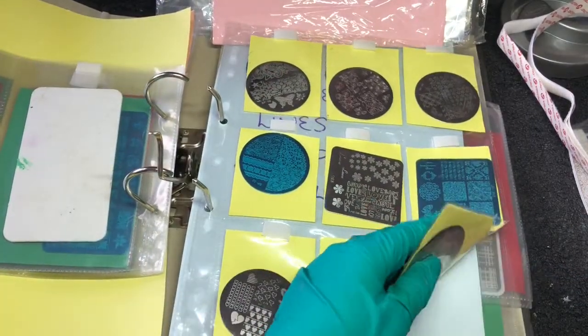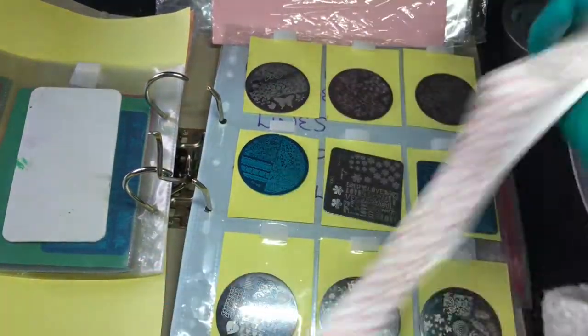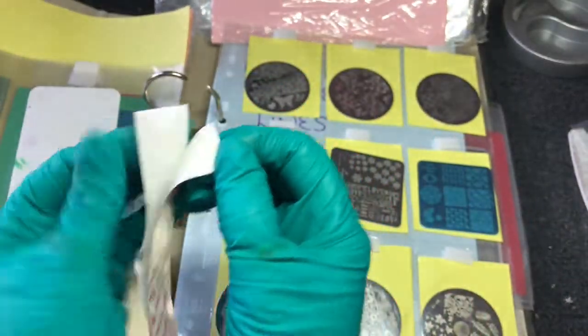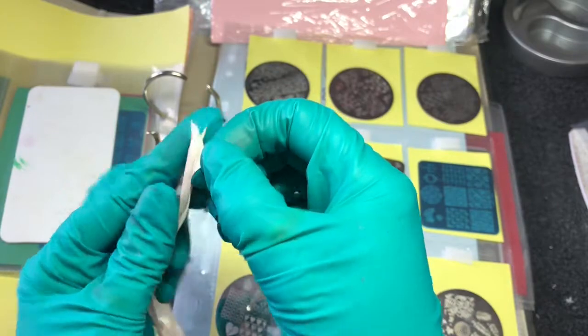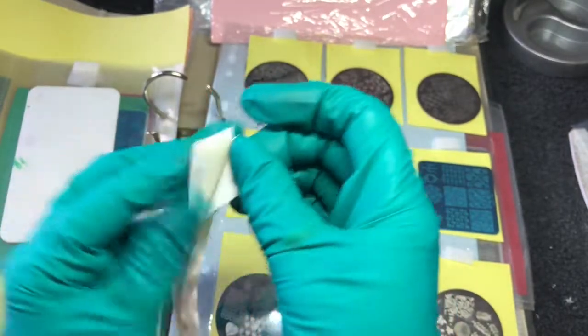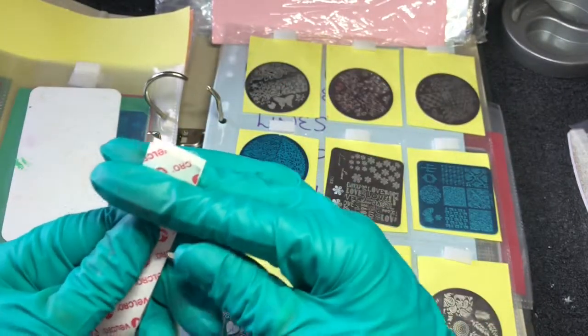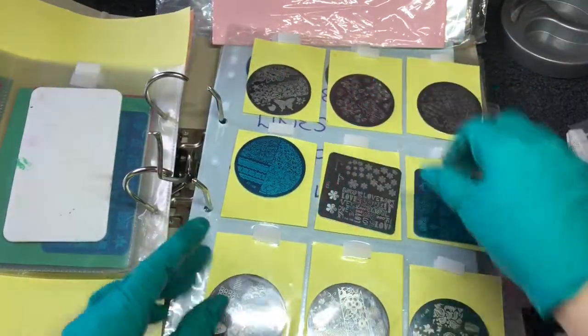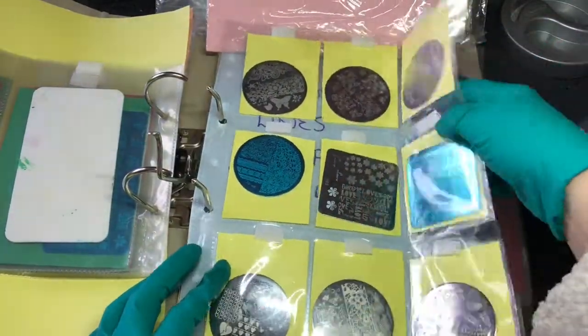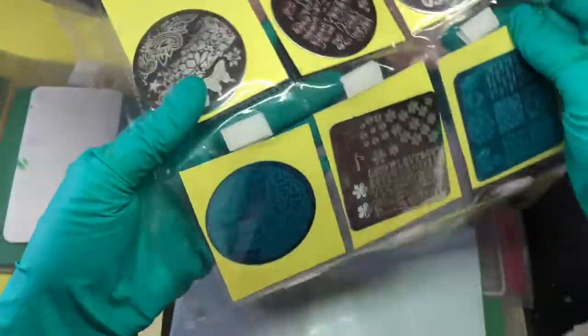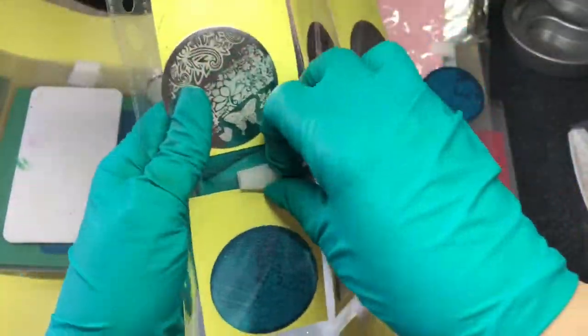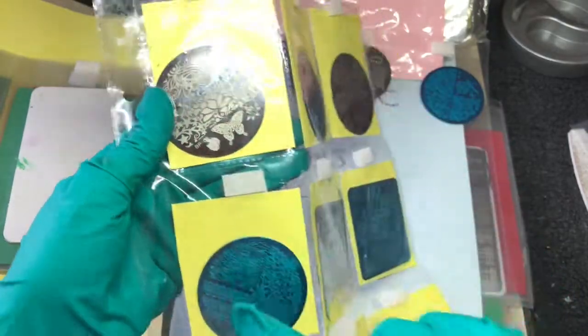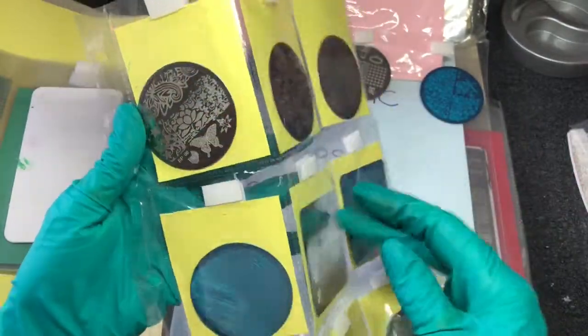When you've got these wallets, get some velcro. This velcro is sticky on one side. I cut a piece off and then stick it into the opening of the wallet.